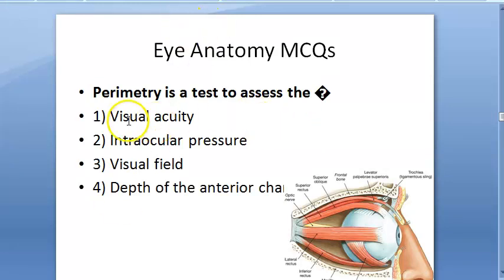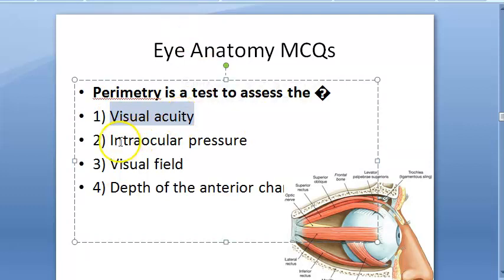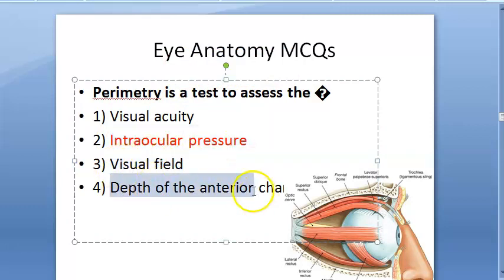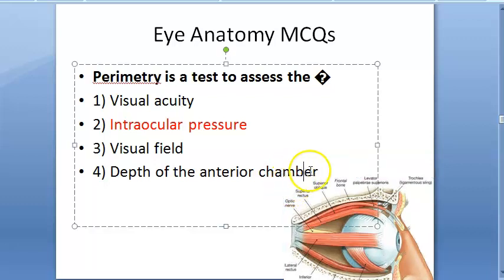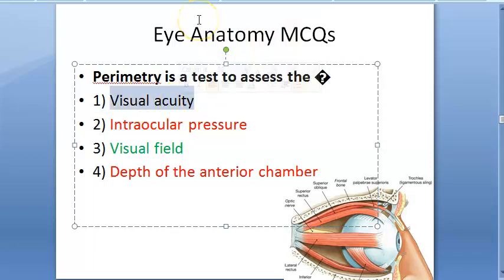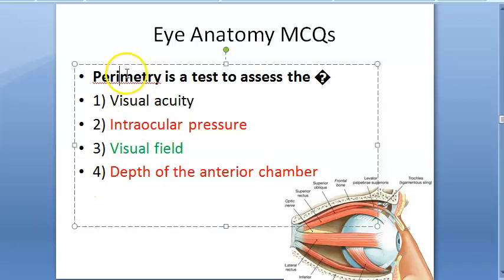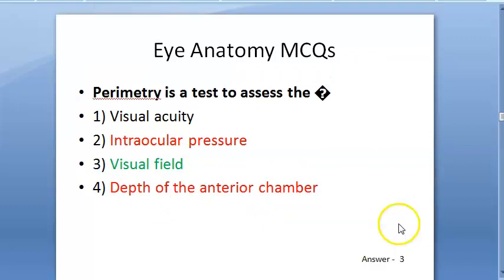Perimetry is a test to assess — visual acuity, intraocular pressure, visual field, or depth of anterior chamber? Visual acuity is for reading the Snellen's chart. Perimetry is used for visual field. The answer is 3: visual field.